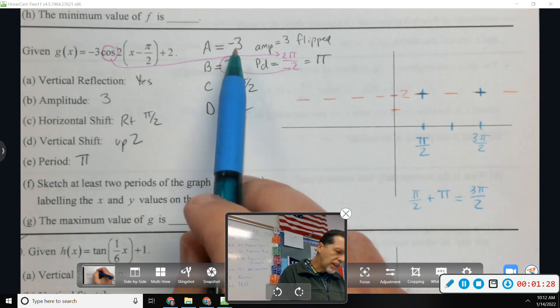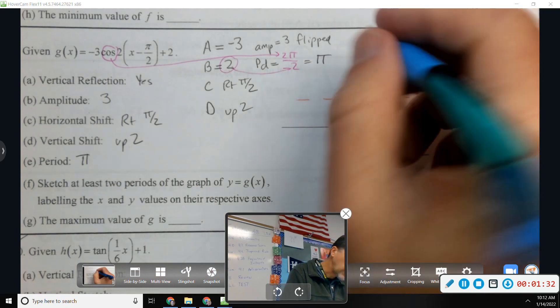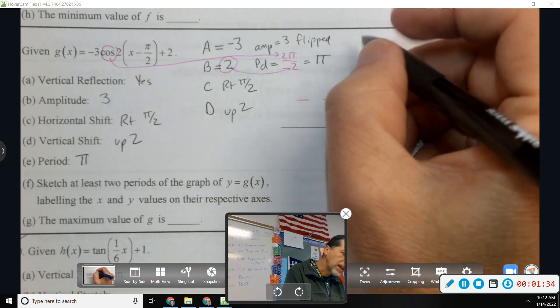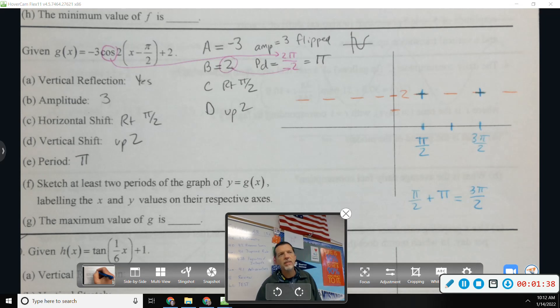And then lastly, amplitude is 3, but it's flipped. It's also a cosine, so I might should have done this at the beginning. The parent function cosine looks like that. So that's kind of my starting point.